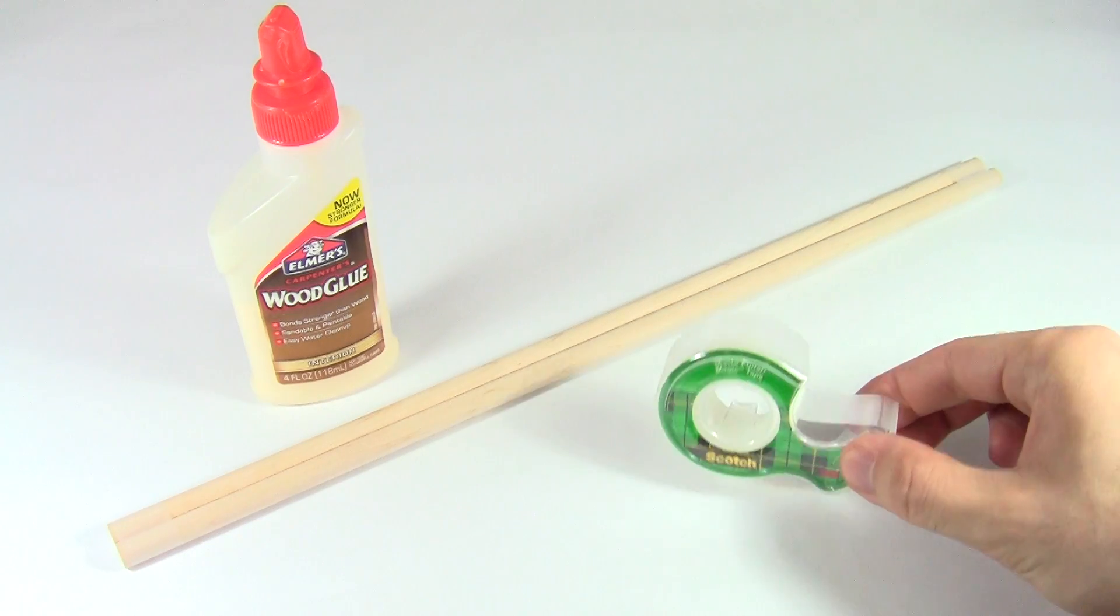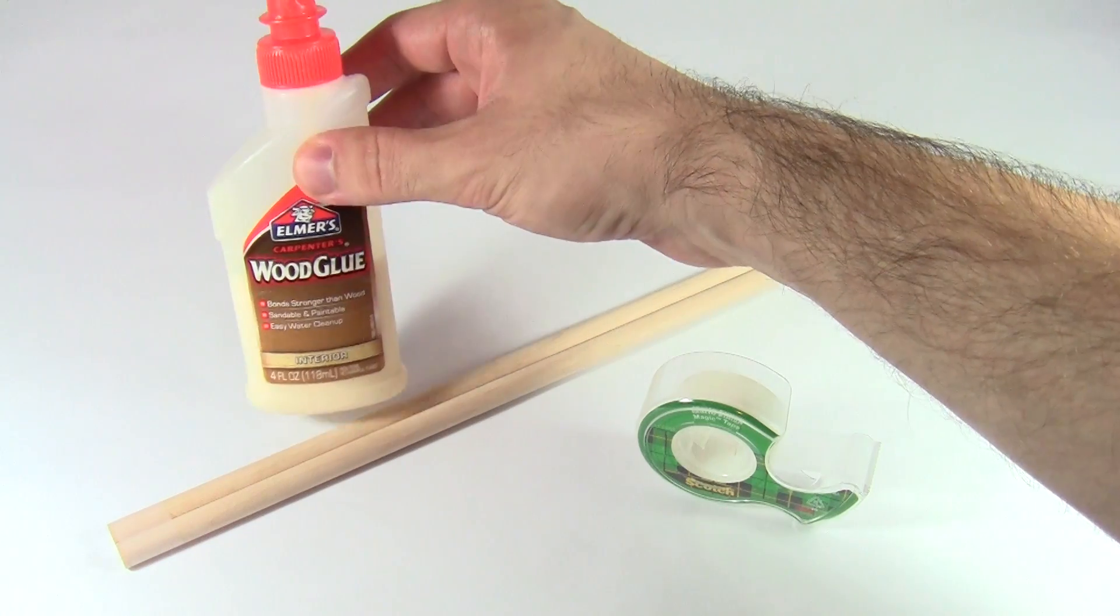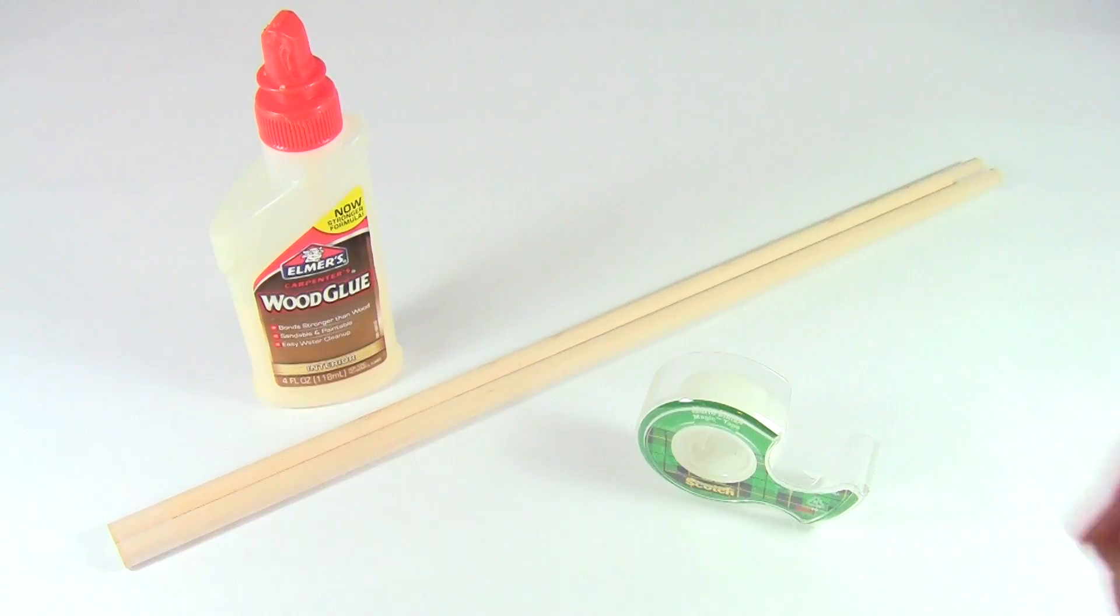Use clear tape to temporarily hold the wooden dowels in place while you bond them together with wood glue. Make sure you wait for the glue to dry completely before you start your experiment.